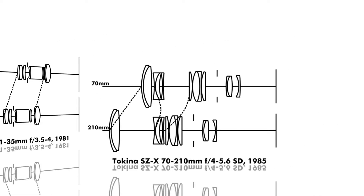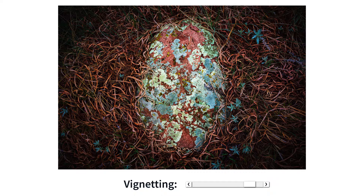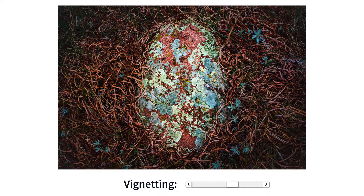If the optical center appears far from the geometric center of the image, it indicates a problem with the lens elements or their alignment. Light fall-off can be corrected during post-processing; however, vignetting can be considered visually pleasing as it draws focus to the center of the image.